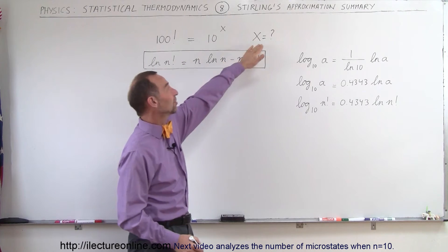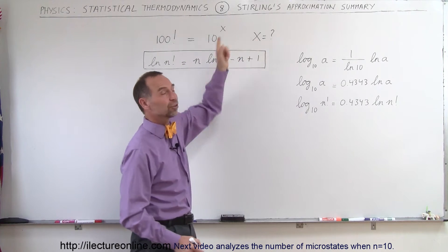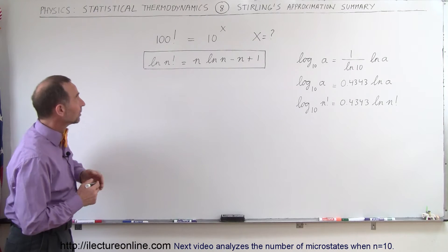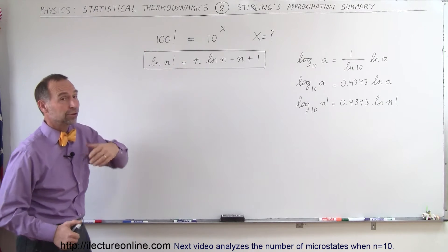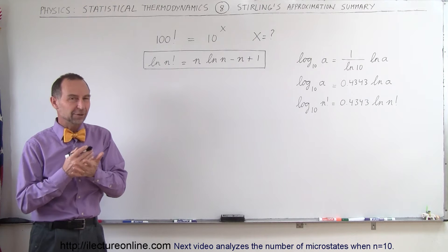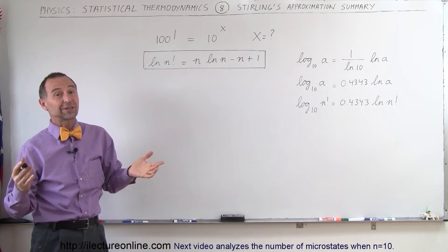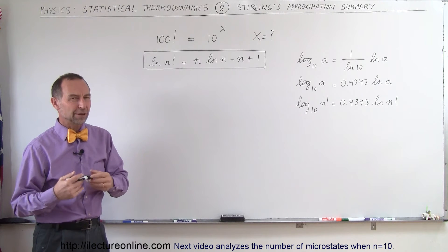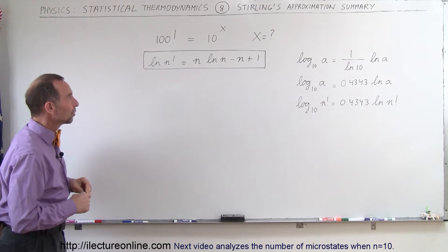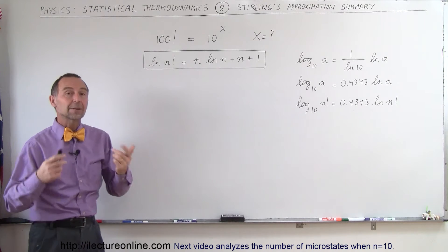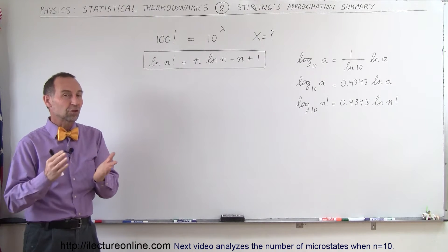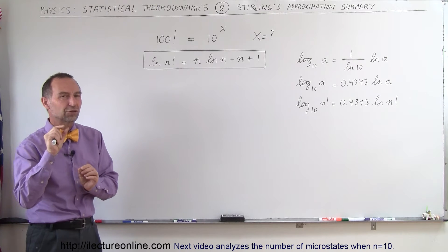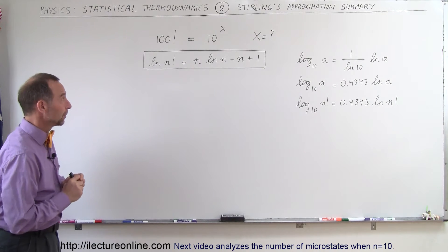What we're trying to do is find out what x is equal to — what that exponent is equal to. And if you try to do this on the calculator and punch in 100 factorial, you'll probably get an error message because most calculators cannot do that. We need a pretty powerful computer in order to do that, so we need that approximation. And when n becomes large, the approximation gives you a very accurate value with a very small approximation error.